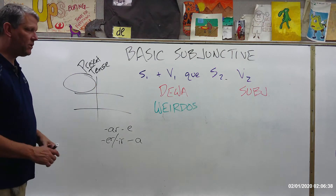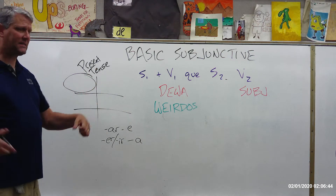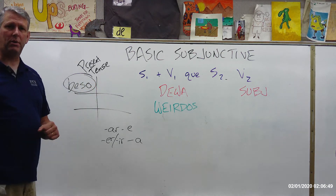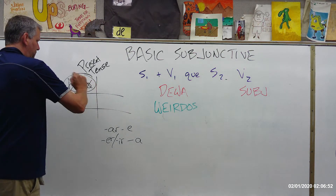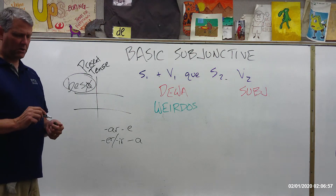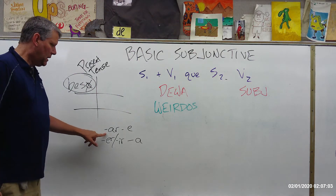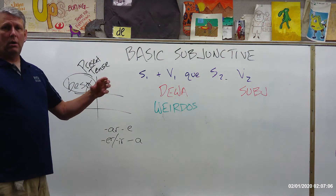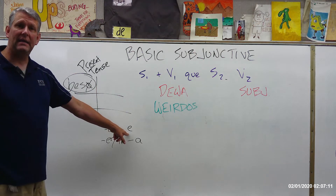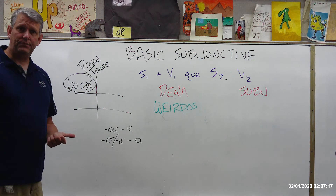Just drop it, get rid of it. If you watch the video on formal commands, you're going to notice that there are a lot of similarities here. So let's just take the verb besar — meaning to kiss. The yo form is beso; we drop the O. Now we're going to add the opposite vowels. For AR verbs, normally we add o, as, a, amos, ais, and an — but here we're going to add E's: e, es, e, emos, eis, and en.